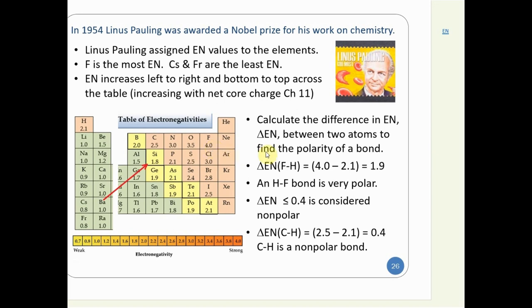We can calculate the difference in electronegativity (ΔEN) between two atoms to find the polarity of a bond. For hydrogen fluoride: ΔEN = 4.0 − 2.1 = 1.9, making that bond very polar — electrons are not shared equally. For a C–H bond in methane: ΔEN = 2.5 − 2.1 = 0.4, so carbon–hydrogen bonds are in fact nonpolar.